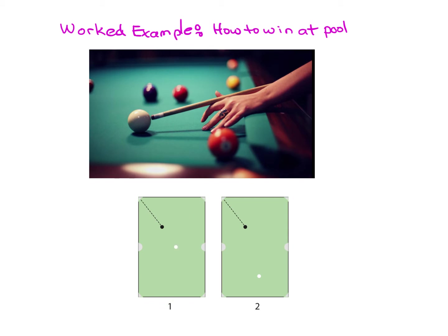We have two possible shots here. If the cue ball is here, can you get the eight ball in the pocket without the cue ball going into the corner? And what about this shot? One is a much better position to be in than the other. Let's see if you can guess which it is — but you will know by the end of this worked example which shot you would rather take. So let's dig in.